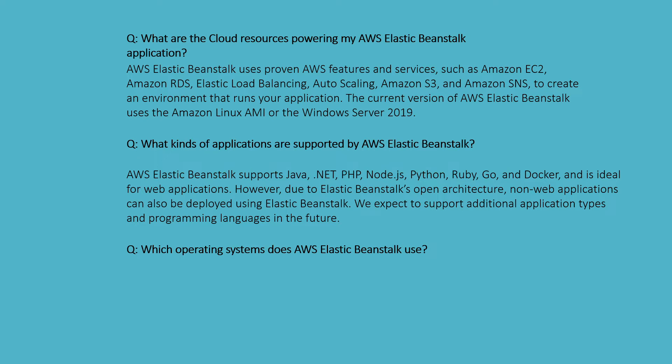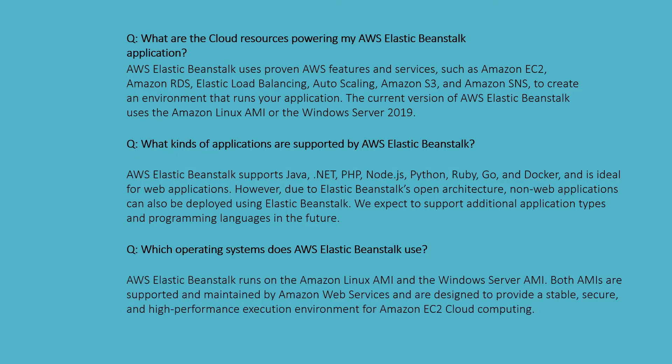Which operating system does Elastic Beanstalk use? AWS Elastic Beanstalk runs on the Amazon Linux AMI and Windows Server AMI. Both AMIs are supported and maintained by Amazon Web Services and designed to provide a stable, secure, high-performance execution environment for Amazon EC2 cloud computing.